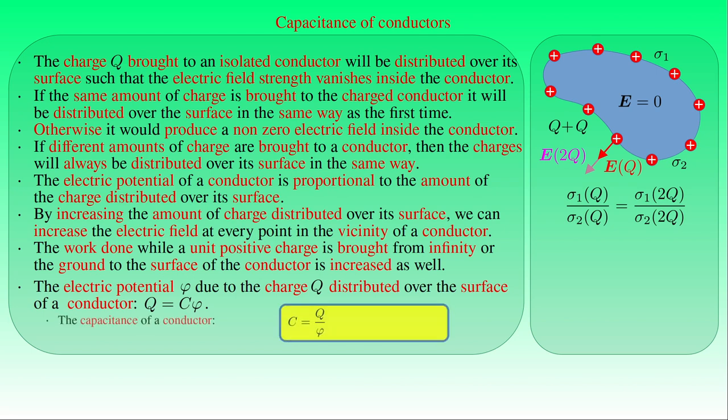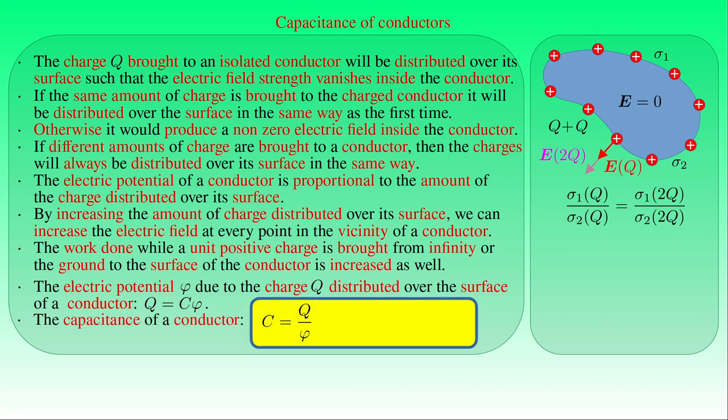The capacitance C of a conductor is determined by the ratio of the amount of charge Q to the potential φ, and its value is equal to the amount of charge that the conductor needs to attain so that its potential can increase by unity. The larger the capacitance of a conductor, the greater the amount of charge can be stored in the conductor at a given potential. A conductor has unit capacity if an electric charge of 1 coulomb increases the potential of the conductor by 1 volt. The unit of capacitance equals 1 coulomb over 1 volt and is called the farad, after the English physicist Michael Faraday, abbreviated by the letter F.